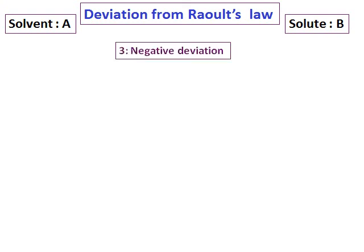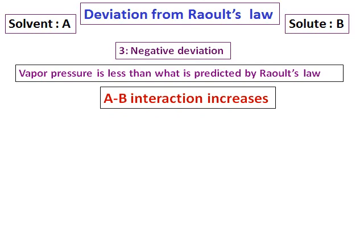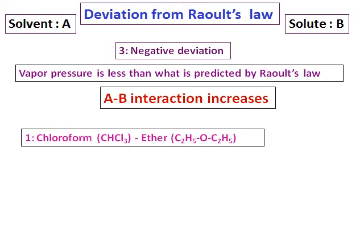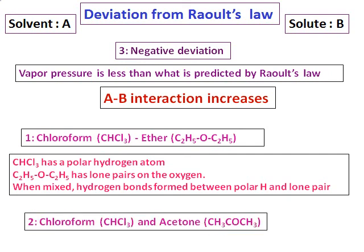Now let us look at negative deviation from Raoult's Law. In this case, the vapor pressure is less than what Raoult's Law predicts — the A–B interaction increases, meaning the solvent and solute interact more strongly with each other. For example, in a mixture of chloroform and ether, individually they have limited interactions, but when mixed, the polar hydrogen atom in chloroform interacts with the lone pair on the oxygen of ether. This holds the molecules inside the solution, so fewer escape and vapor pressure decreases. Another example is chloroform and acetone — the interaction between chloroform and acetone is greater than between like molecules, causing the vapor pressure to be lower.